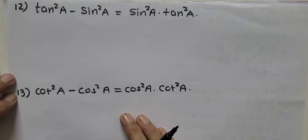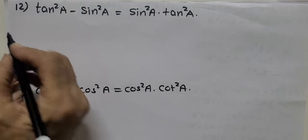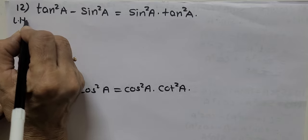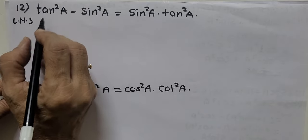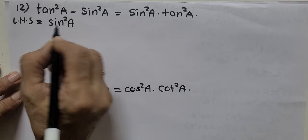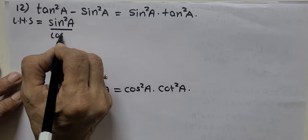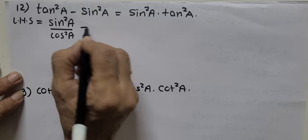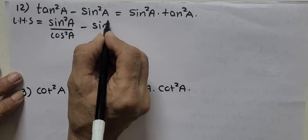This sum can be done in many different ways. LHS, I will convert tan to sin and cos. So that will give me sin square A upon cos square A minus sin square A.